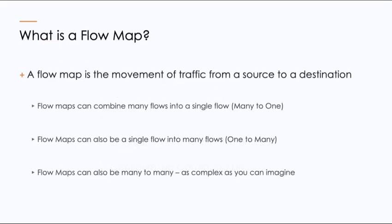What is a flow map? A flow map is the movement of traffic from a source to a destination. The important thing to remember is that flow maps can combine many inbound ingestion network ports and send it into either single flows or multiple flows, meaning a many-to-one or a many-to-many relationship. They also can include parameters, which are rules, to allow you to create filters to determine what goes where.